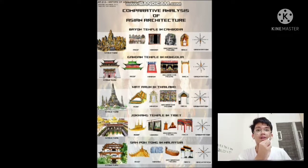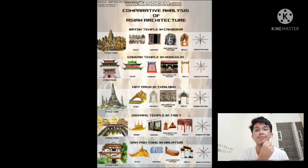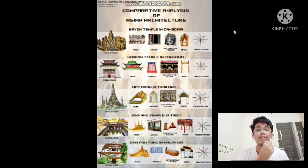Good afternoon ma'am. On behalf of my partner Mrs. Straubo, I am Kurt Werner-Fabrero and I'm going to be the presenter for today. Our task is to compare, analyze, and evaluate the different architectural elements and characteristics of structures from across the Asian region — from Cambodia, Thailand, Mongolia, Tibet, which is an autonomous region of China, and Malaysia.